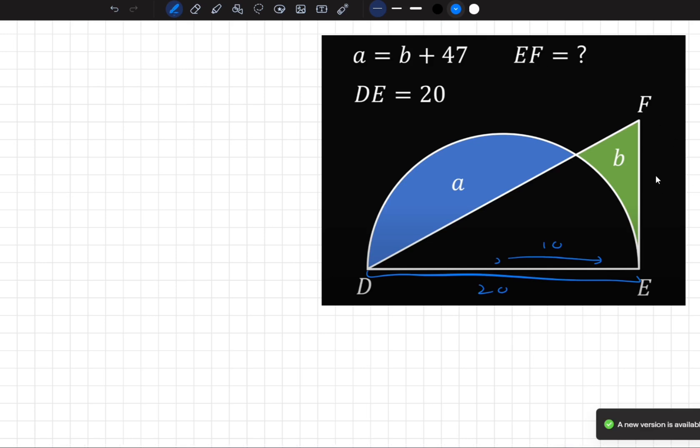And it wants you to work out the length of EF, which I'm going to call X right now. So first things first, I'm going to work out the area of this section. I'll call this point X, so DXE.